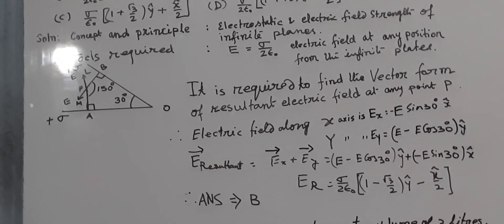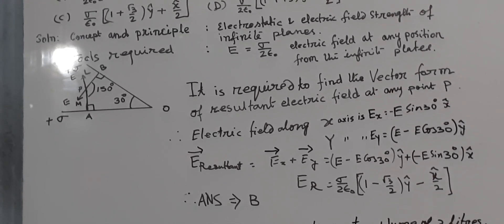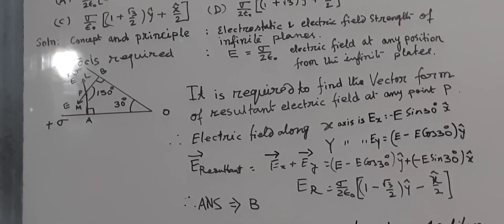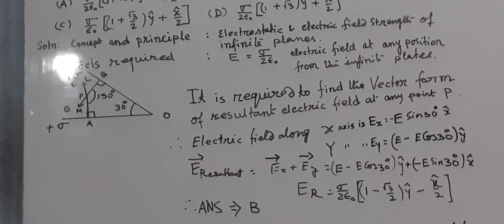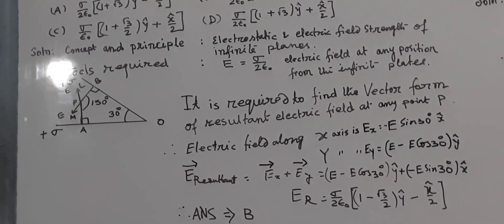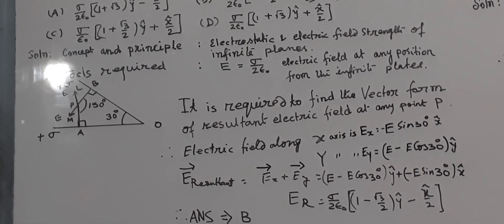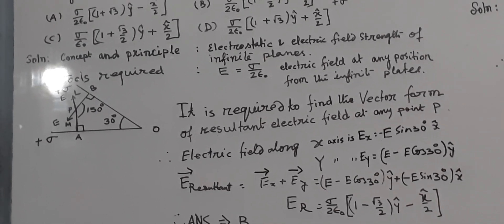Two infinite planes, each with uniform surface charge density plus sigma, are kept in such a way that the angle between them is 30 degrees. The electric field in the region shown between them is given by, there are four choices, a diagram is also provided.